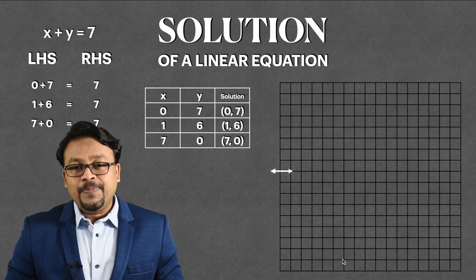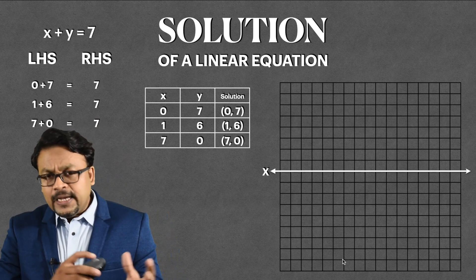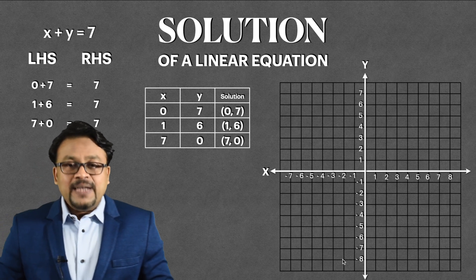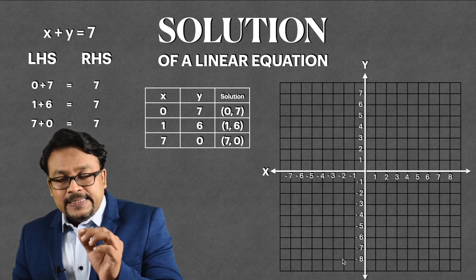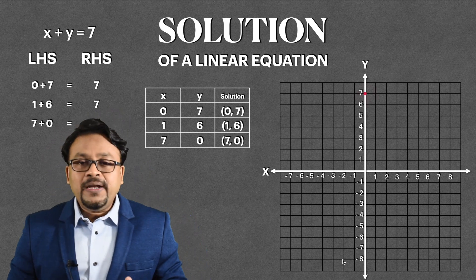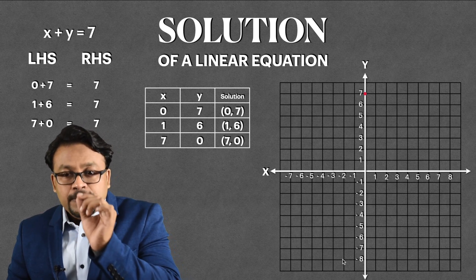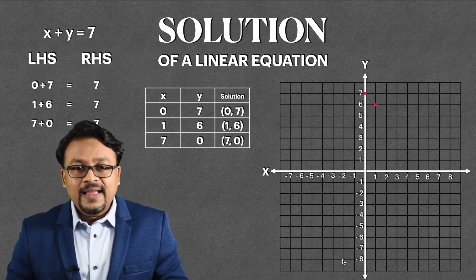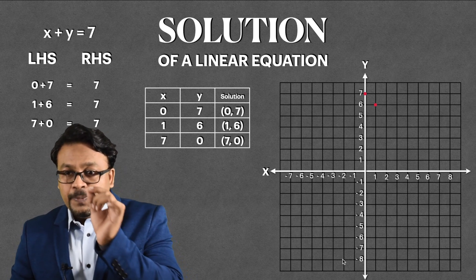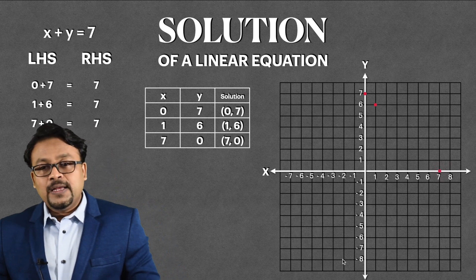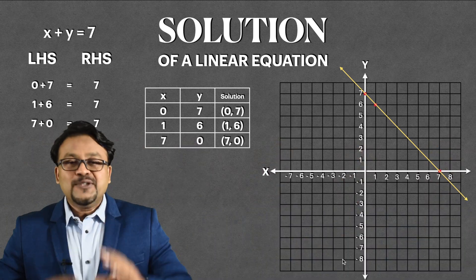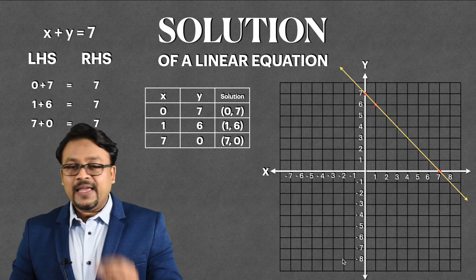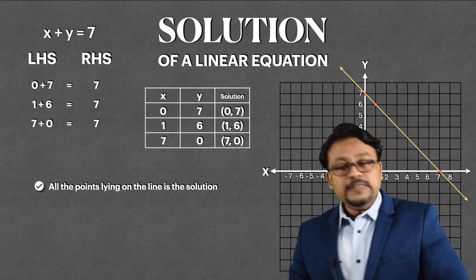If we represent these values on a graph — we all know how to draw a graph of a linear equation — we have plotted the points. The first point is (0, 7): X axis is 0, Y axis is 7. Next is (1, 6): X axis is 1, Y axis is 6, highlighted in red. The last one is (7, 0): X axis is 7, Y axis is 0, so that point lies on the X axis. If we join all the points, we get a straight line. The conclusion is: all those points which lie on the line happen to be the solution.